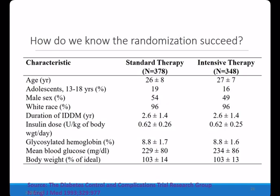How do we know that randomization has succeeded? We can do a descriptive analysis of the data allocated to the standard therapy and the intensive therapy groups. If we compare them and find that the central tendency of the characteristics are close to each other, we can conclude that randomization has succeeded and the two groups are well-balanced.